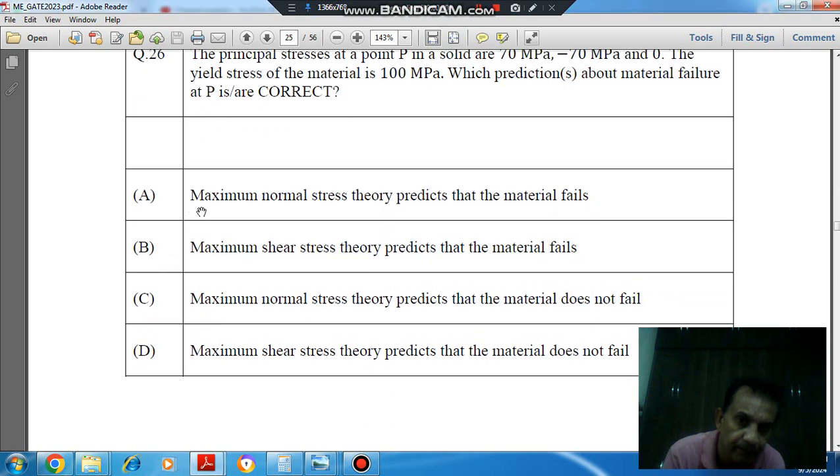Option A: Maximum normal stress theory predicts that the material fails. Option B: Maximum shear stress theory predicts that the material fails.